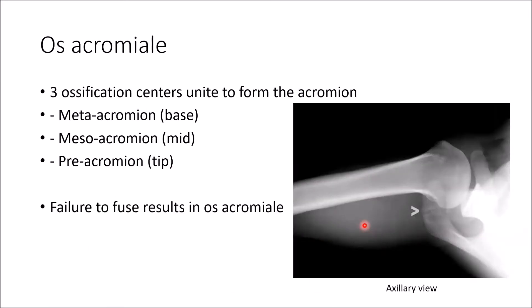Os acromialis: there are three ossification centers forming the acromion — the meta-acromion, meso-acromion, and pre-acromion. Failure to fuse these results in the os acromialis.